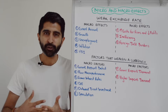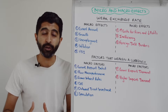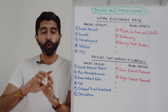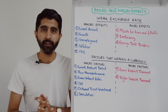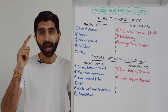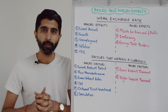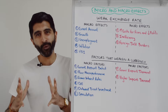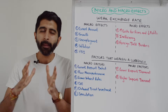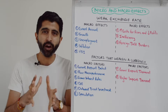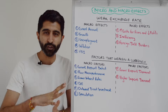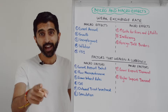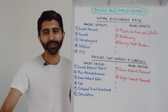So there you have it — all the micro and macro content you need to know for a weak exchange rate. Make sure you're doing this for all the topic areas in paper three. Watch all the other paper three videos on the channel, but most of all work independently and do this on your own. Thanks for watching, and I'll see you in future ones.